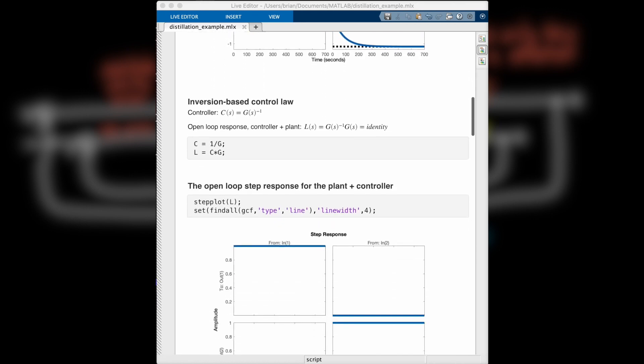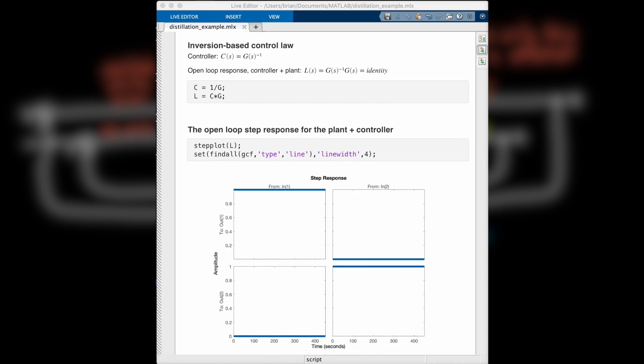Now we can build the inversion-based controller, and see the resulting open-loop response of the combined controller and plant, which I set to L in the script. The first input is perfectly passed through to the first output, and it doesn't impact the second output at all. And the response from the second input is the opposite. So this controller is pretty awesome because we can basically independently set the concentration levels for both outputs to whatever we want.